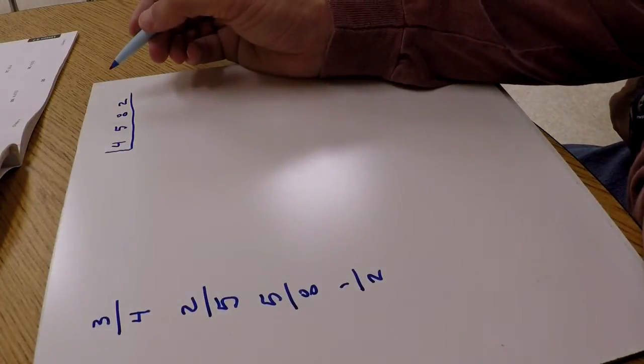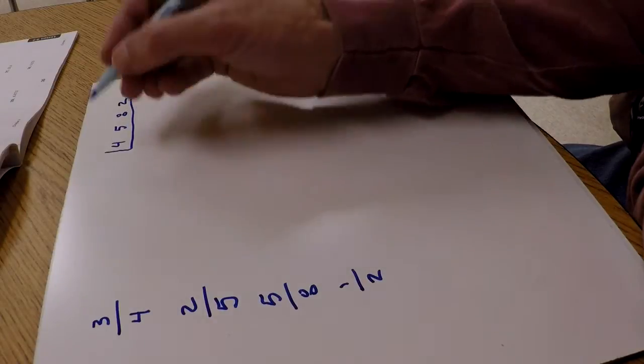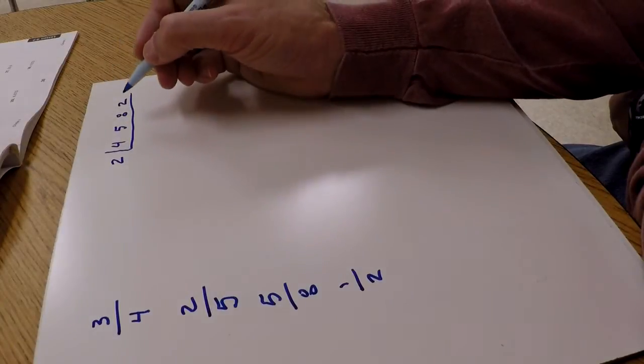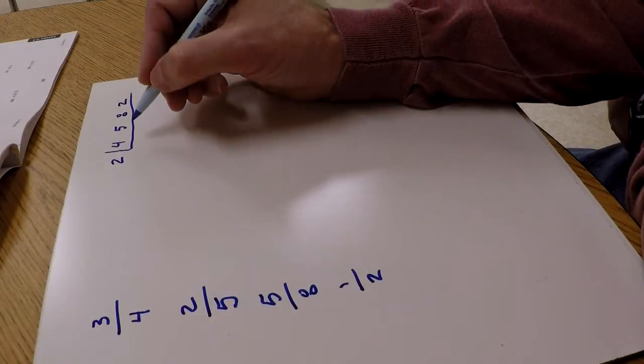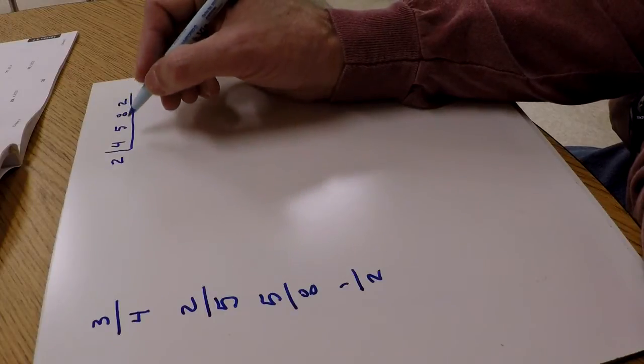So 2 is common with 4, 8, and 2, so I'm going to use 2. Then just ask yourself how many times will 2 go into each one of these numbers. If it won't go into the number evenly, just bring that number down.